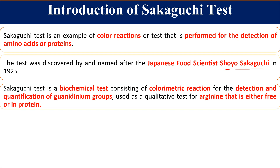It is a biochemical test by which we detect biomolecular compounds based on color production. It is a colorimetric reaction for the detection and quantification of the guanidine group. We can use this test both qualitatively and quantitatively, though later I will explain the drawback of why we generally do not use it for quantification.